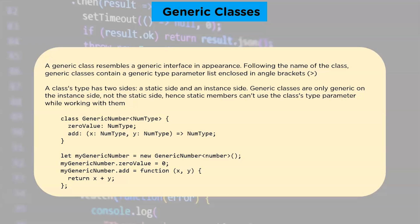A class type has two sides: a static side and an instance side. Generic classes are only generic on the instance side, not on the static side — hence static members cannot use the class type parameters. Putting the type parameter on the class itself, like the interface, ensures that all of the class's properties and functions work with the same type.